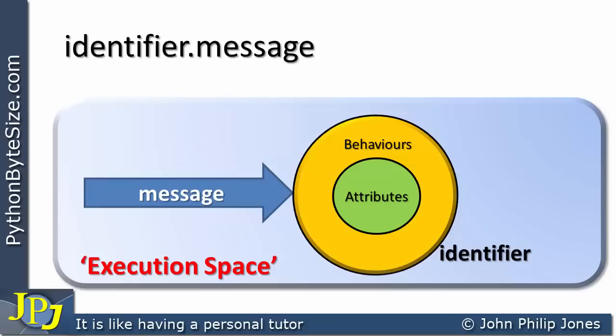This video has looked at the relationship between a class and an object in abstract. The next video is going to look at it with a particular type of class — the string class — creating an instance of it and reflecting on what we've covered here with respect to an actual programming example.